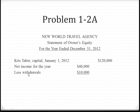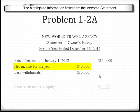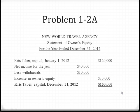We're then going to list the withdrawals of $10,000 and deduct this amount — notice it says less withdrawals, $10,000. We then determine what the increase or decrease in owner's equity is. In this case, we had $40,000 income and a $10,000 draw, giving us an increase in owner's equity of $30,000. We then add the beginning capital to the increase to determine the ending capital. So Chris Tabor Capital, December 31, 2012, equaled $150,000.